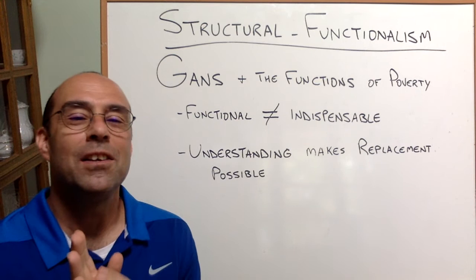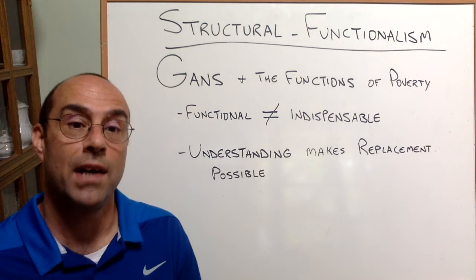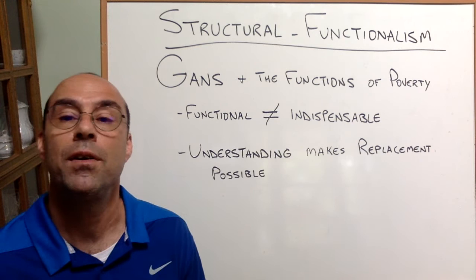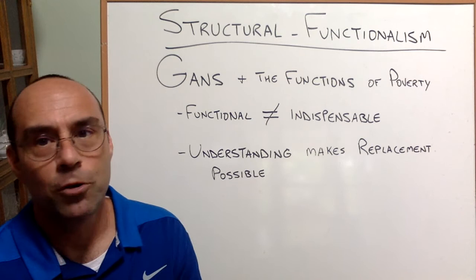So Gans in his positive functions of poverty, he says, okay, so let's be honest. What does poverty do for society in general? And he lists a bunch of things. I mean, it's like 10 or 15 different positive functions, good things that come out of some segment of America being in poverty.